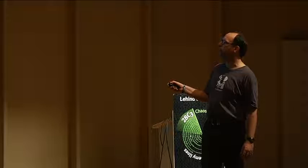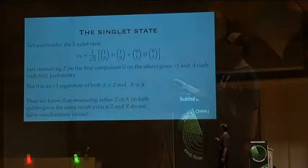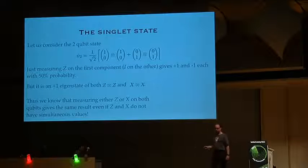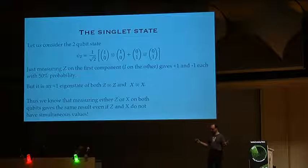The important thing is this is also an eigenstate of X, X. Remember what X does — it flips the two components. Also, if I do two X measurements, I measure plus one, plus one with 50% probability, or minus one, minus one with 50% probability, but they're always the same. Each individual one cannot have sharp values on both X and Z, but on the combined measurement of two X's or two Z's, I can have sharp measurements on both. That's the new thing. I can both yield random results, but they always see the same thing for both types of measurements.